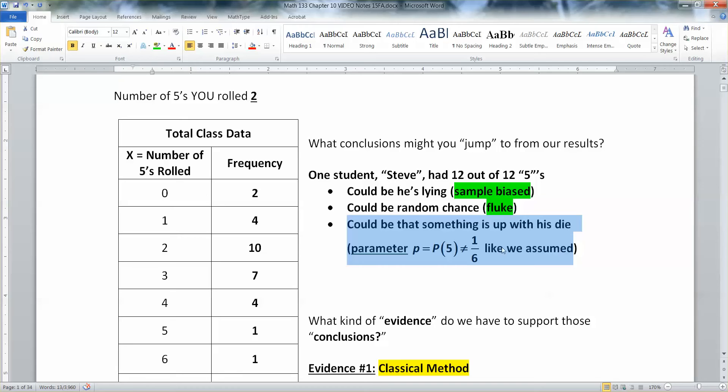Maybe his die was not the proportion of fives is one sixth. Maybe it was something else, say like 100%, which is what it was. I have rigged dice in my office that will do nothing but roll fives. I'm a nerd. I have these kinds of things. Actually, you can buy them for two bucks on Amazon if you're interested.